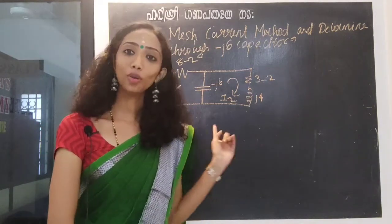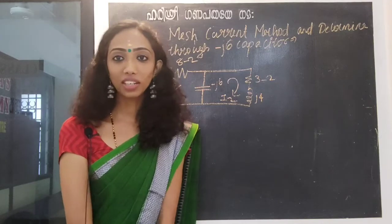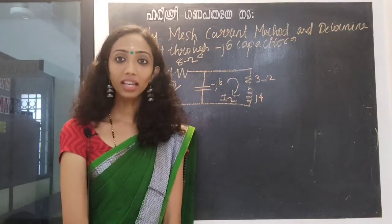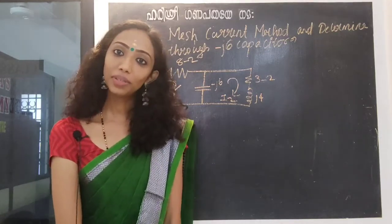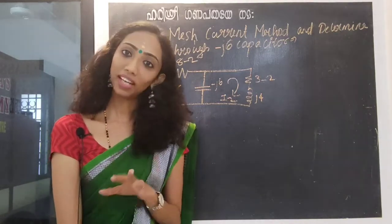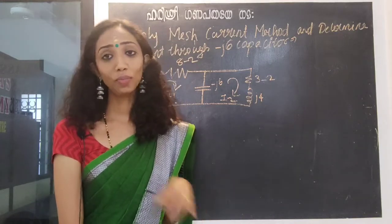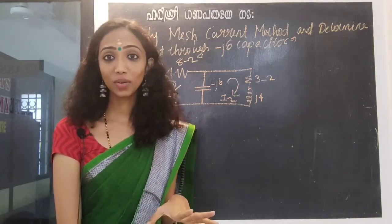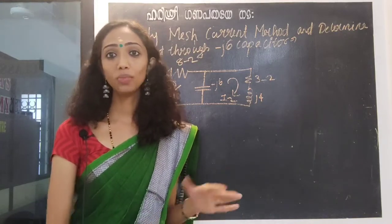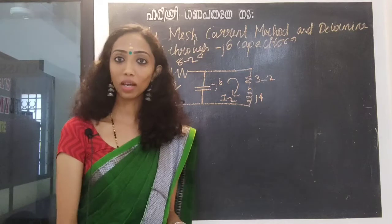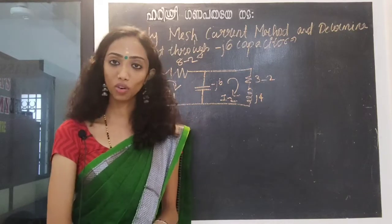This Mesh Analysis circuit — we don't have a current source. It's simple. If you don't have a current source in the loop, you can write easy KVL equations, then solve it. Cramer's rule will be used to solve.